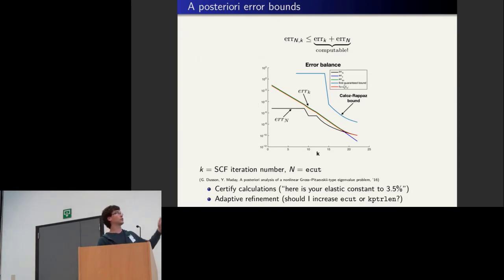And what they have been able to show is that the error you make, in a certain regime of assumptions which you can check, is given by the sum of two terms: one that depends on K, which is the index of the SCF cycle basically, and one which is N, which is the Ecut. And both of those are computable, and you can get things like this plot here, which shows the error in red. This is the actual error as measured. And this is the sum of two terms: the green curve, which is the error due to the SCF cycle, and the black one, which is due to the basis size incompleteness. And using that, you can certify computations to give an error bound.